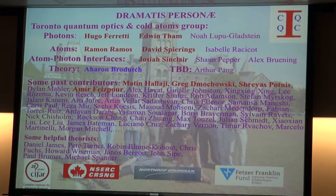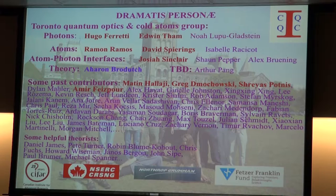Let me begin by giving credit to the people who really did this experiment. The main course was built up by Amir Faizpour, Greg Demachowski, and Mateen Halaji, taken over more recently by Josiah Sinclair and a few others — that's on the EIT experiments for light-matter interactions and nonlinearities. The imaging work was done by Hugo Ferretti and Edwin Tham. And the BEC work — Shreya Sprotnes was instrumental in building what we've got right now, and it's been taken over by Ramon Ramos and David Spearings.